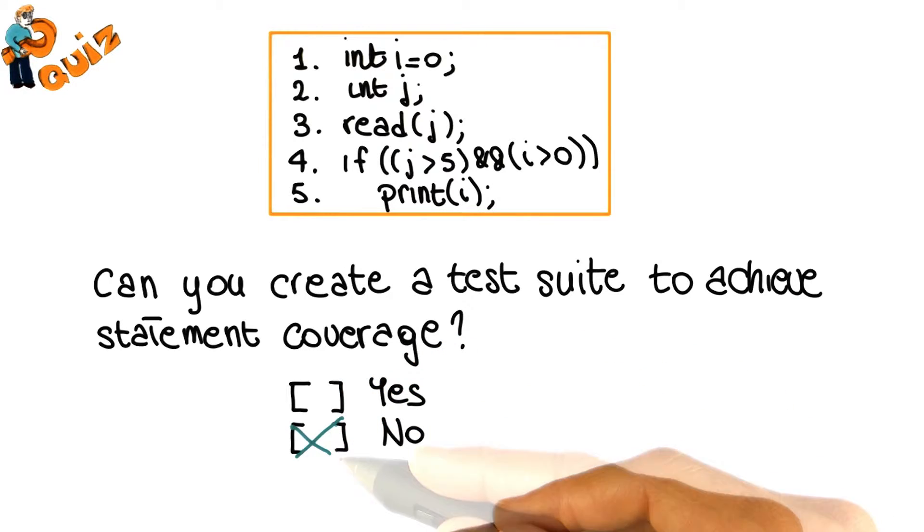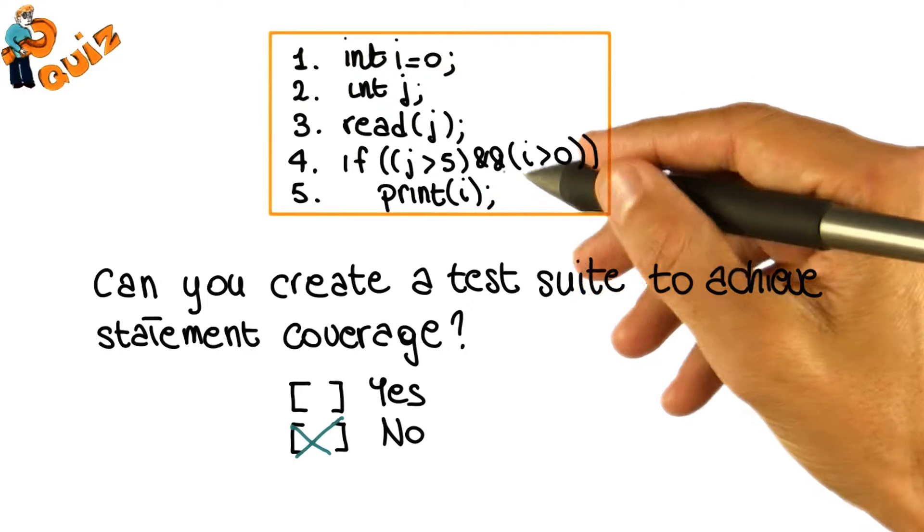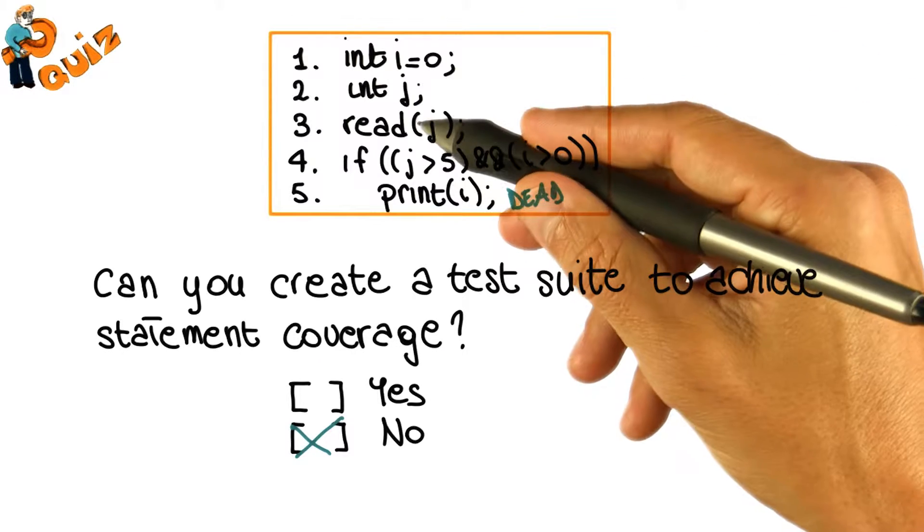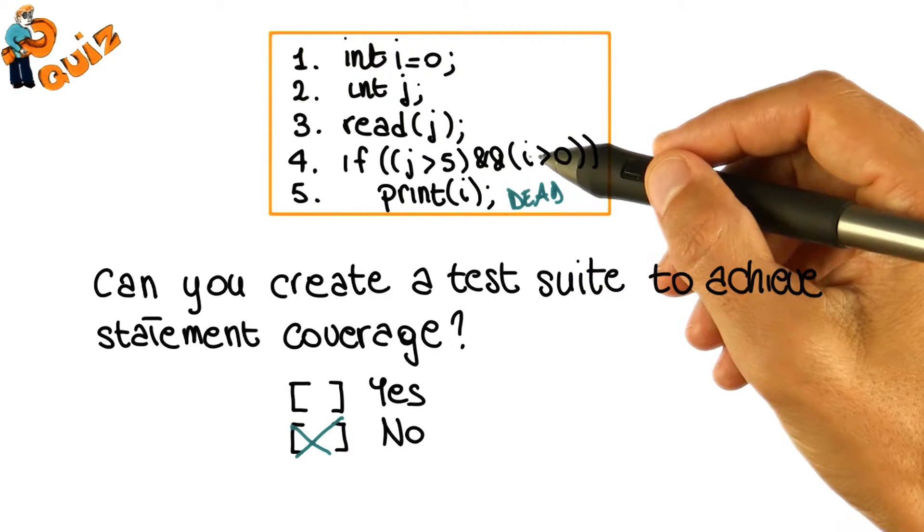And the answer in this case is no. And the reason for this is because this code is unreachable. This is dead code. Because no matter the value of j, this condition will always be false, because i will always be zero.